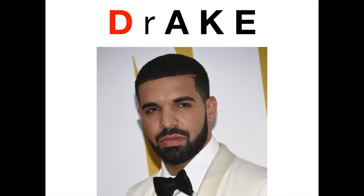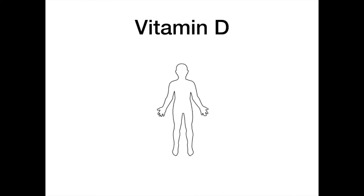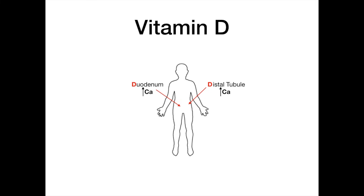Let's start with vitamin D. Vitamin D's overall function in the body is to increase the level of calcium. It does this by acting on three different sites, and conveniently the mnemonic is the letter D. The first site is that vitamin D increases the absorption of calcium in the distal renal tubule. The second site is that vitamin D increases the resorption of calcium in the duodenum. So far we have distal renal tubule and duodenum — both conveniently begin with the letter D.